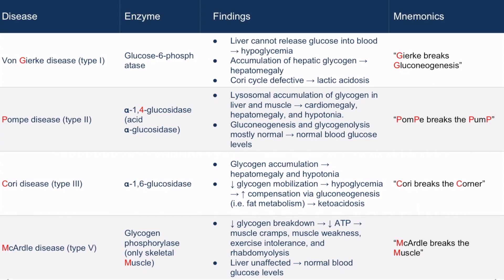Von Gierke disease can be remembered by the phrase 'Gierke breaks gluconeogenesis.' Notice that the G in Gierke is associated with the G in gluconeogenesis.